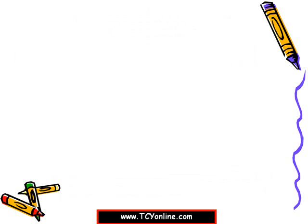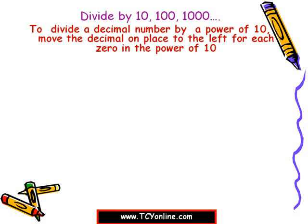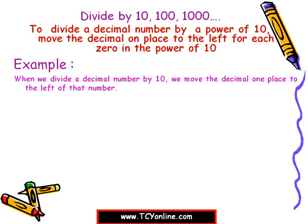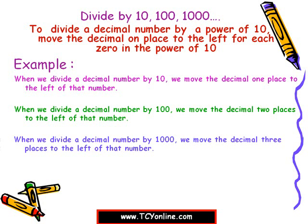Now let's see what happens when we divide a number by 10, 100, or 1000. While dividing any decimal number by a power of 10, we simply move the decimal one place to the left for each zero in the power of 10. For example, dividing by 10 moves the decimal one place left, dividing by 100 moves it two places left, and dividing by 1000 moves it three places to the left.